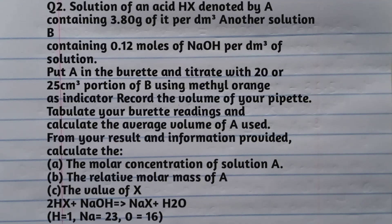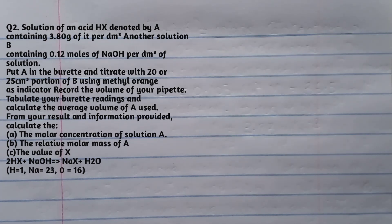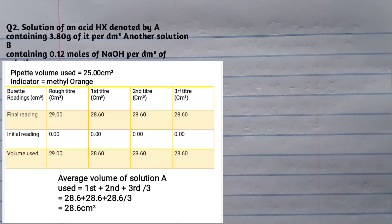Question number two: Solution of an acid HX (denoted by A) contains 3.8 grams of HX per dm³. Another solution B contains 0.12 moles of sodium hydroxide per dm³. Put A in the burette and titrate with 25 cm³ portions of B using methyl orange as indicator. Tabulate your burette readings and calculate the average volume of A used. From your results, calculate: A — the molar concentration of solution A; B — the relative molar mass of A; C — the value of X; and D — the number of moles in 25 cm³ of solution B.